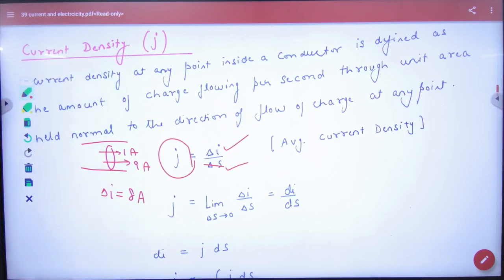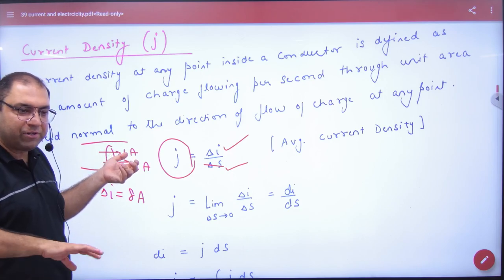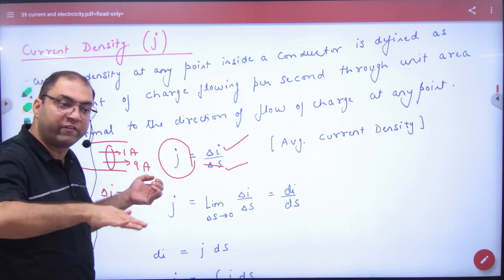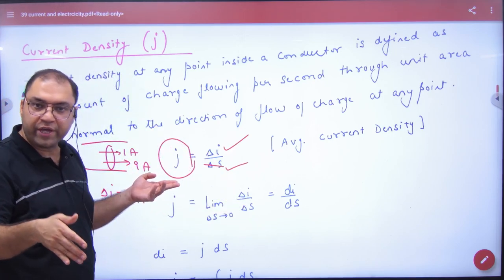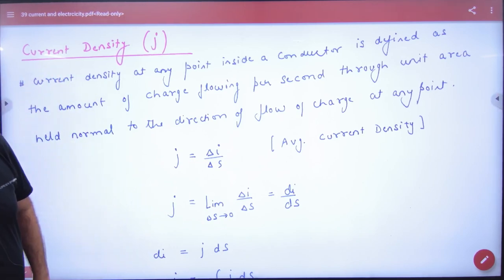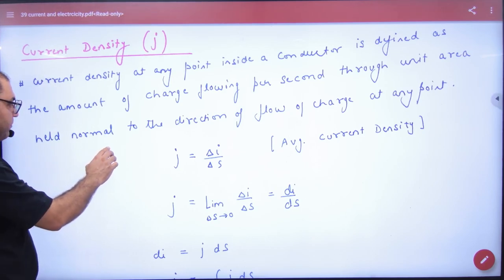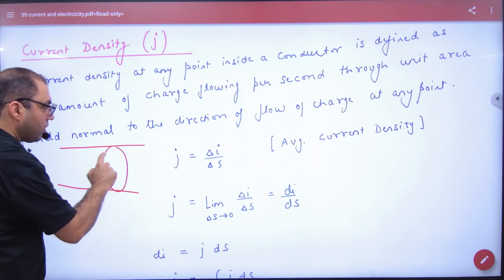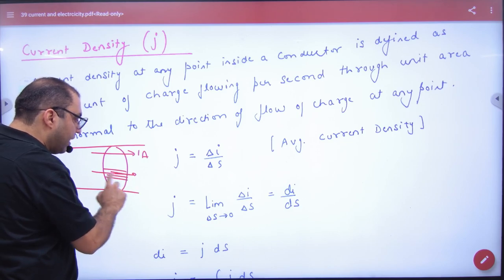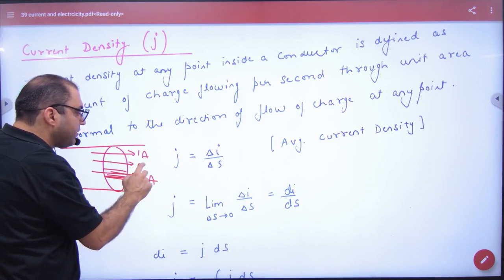Isko bolenge average current density. Par ye jo zaroori nahi hai, kyunki ye to total change in current hai. Current har instant per change ho raha hai - 1 ampere, 1.1 ampere, 2 ampere, 2.1. Sir ho sakta hai kuch der ke liye 2.1, 2.1, phir 3 ho jaye, 3.05, kuch bhi. To yaani ki current density ki value har point per different bhi ho sakti hai. Ya aise maan lo ek wire hai - yaha par current maan lo 1 ampere hai, par yaha par charge zyada move kar raha hai 2 ampere, yaha par bohut hi kam move kar raha hai 0.5 ampere.